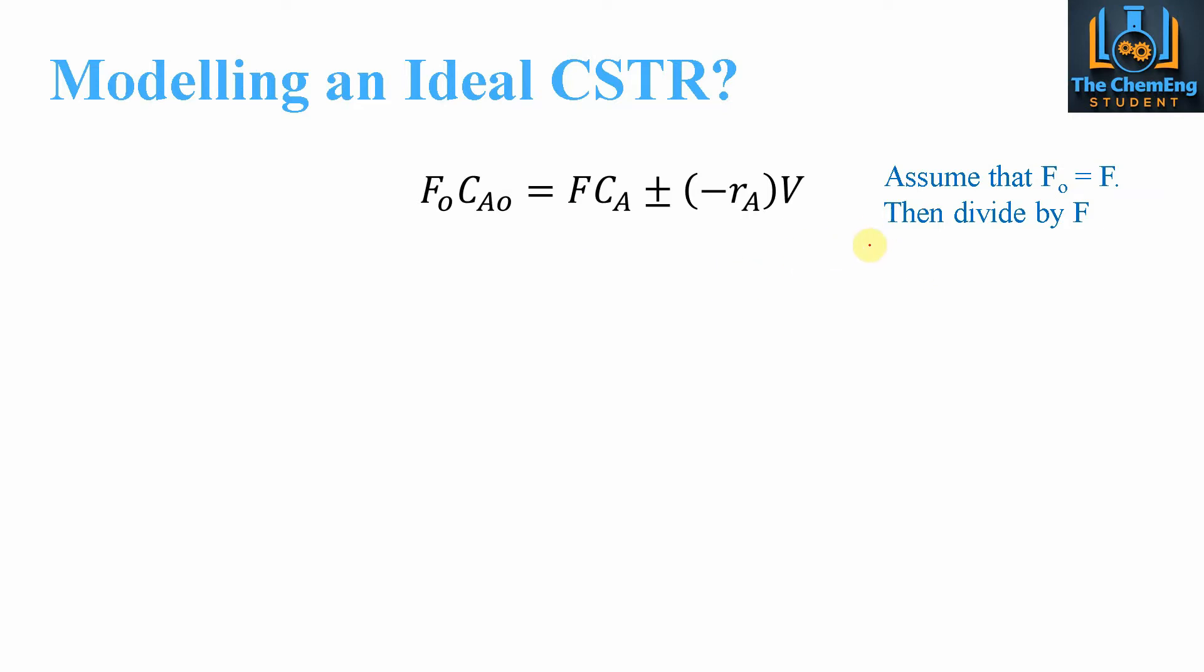And then what we can also do is divide by F. That way we will reduce the number of F variables. So after we make F₀ equal F, divide by F, we get this expression here.